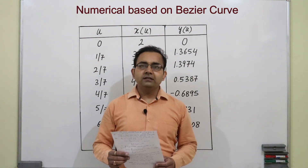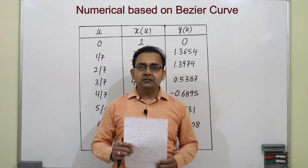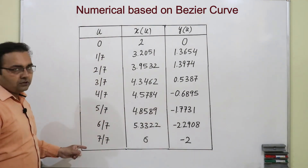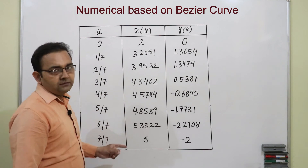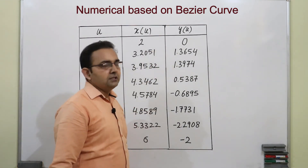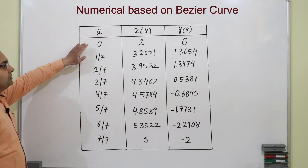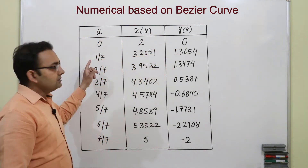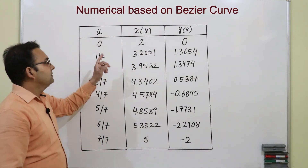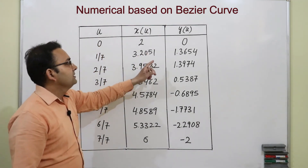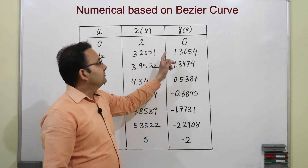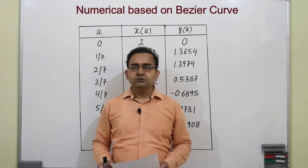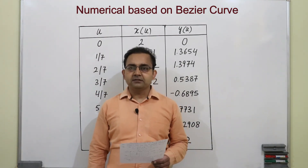Now we find the coordinates of the Bezier curve for different values of u. This is the table of u values with their corresponding x(u) and y(u). For example, at u equal to 1/7, the value of x(u) is 3.2051 and the value of y(u) is 1.3654. Similarly, we calculate all these values. This was the numerical on the Bezier curve. Thank you.